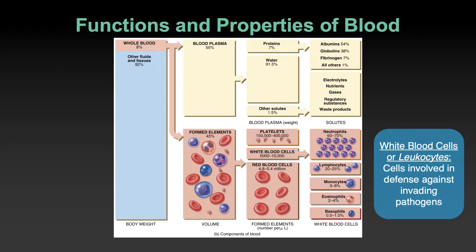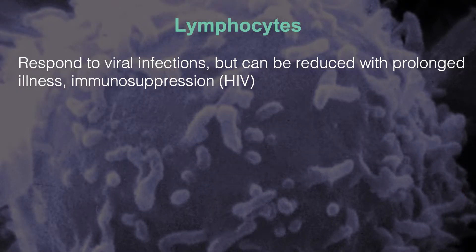White blood cells are all of these cells on the right-hand side. If you're going to remember one in the lymphatic system, lymphocytes are important — we'll spend most of our time talking about them today. Only 20 to 25 percent of the white blood cells are lymphocytes, a small fraction of the cells in the body. Lymphocytes are activated in cell-mediated immunity and antibody-mediated immunity.